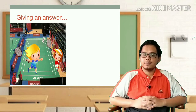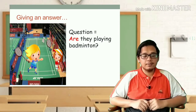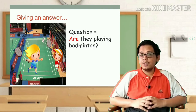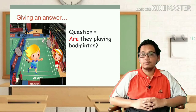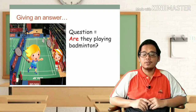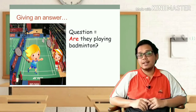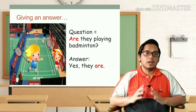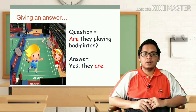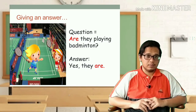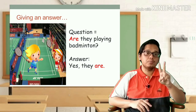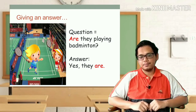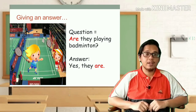Now look at the picture. Let's see the question: Are they playing badminton? In the picture, did you see them play badminton? Yes, of course they are. So the answer is: Yes, they are. We put 'yes' in front, then the personal pronoun 'they' because there are two persons in the picture, and then we put the word 'are' — Yes, they are.